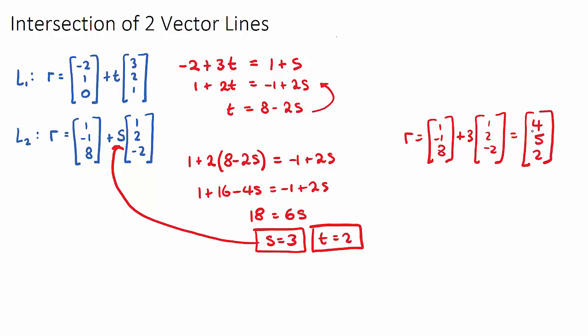So this position vector here, 4, 5, 2, this will be the position vector where they intersect. I could have found this by subbing t equals 2 into L1.